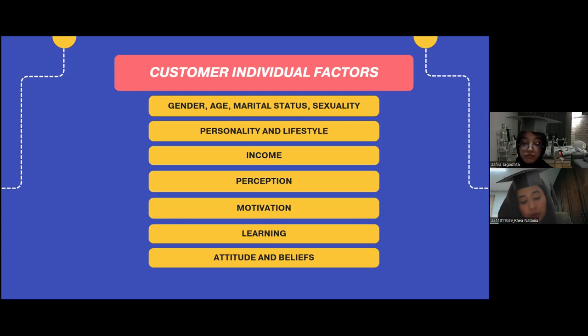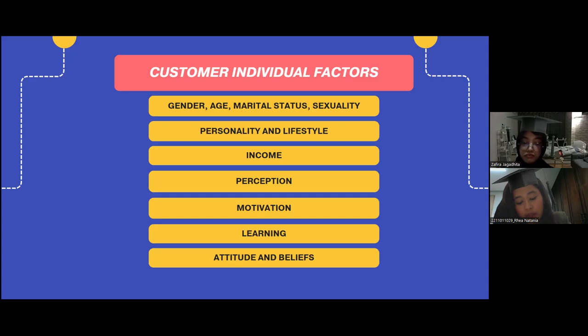Next is learning — closely linked with memory, which is the storage for learned information. From a marketing point of view, memory helps create nostalgia for consumers, and marketers can take advantage of nostalgia when advertising certain products for different categories of people. The last individual factor is attitude and beliefs — attitudes are a set of beliefs and feelings that a human being develops over time through interacting and learning regarding other people, goods, events, and issues.